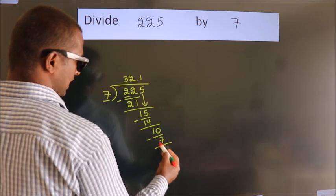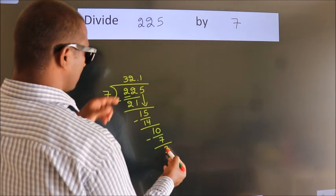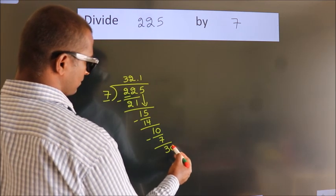Now we subtract. We get 3. After this, we already have the decimal. So directly take 0. So 30.